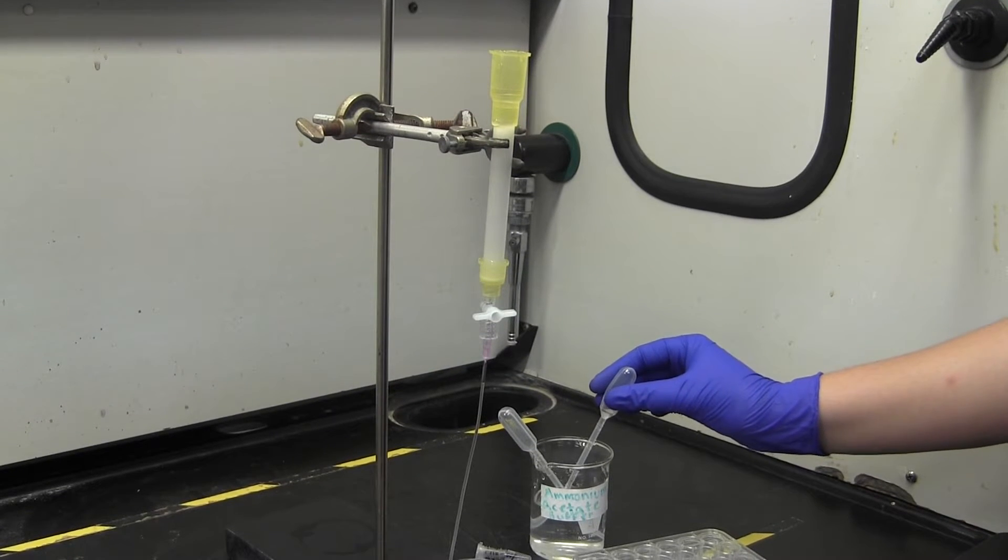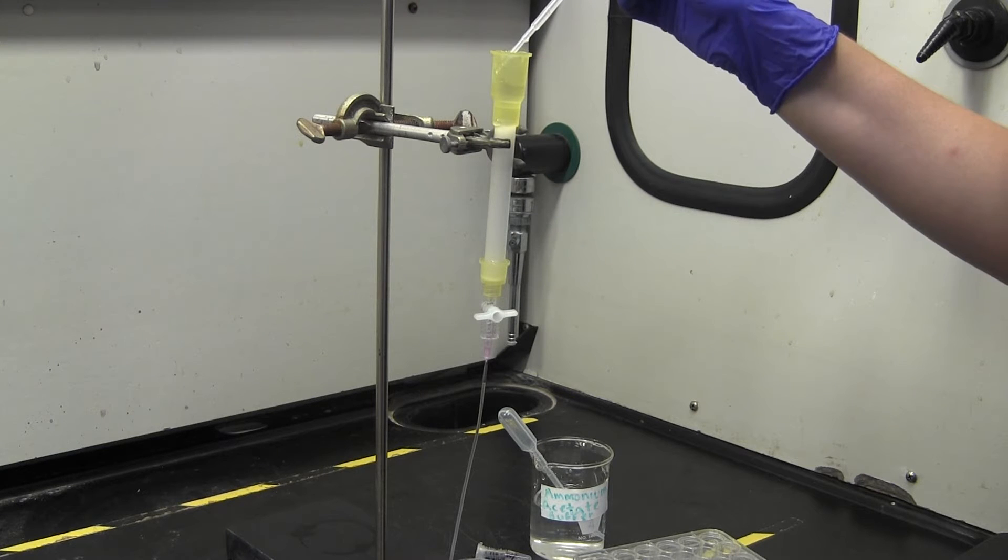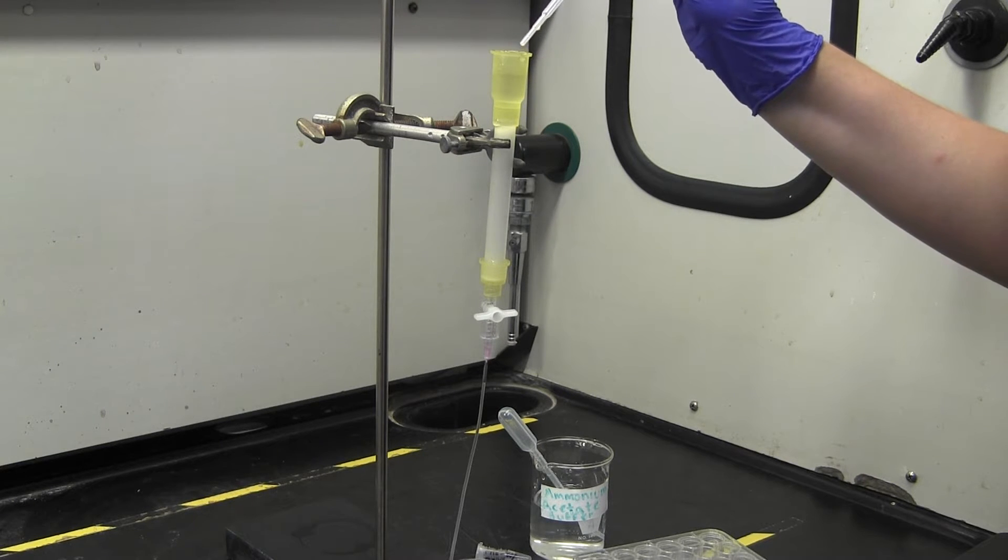Begin by running about 10 milliliters of your buffer through the column to make sure that it is clean. Do not worry about the intervals between the drops at this point.